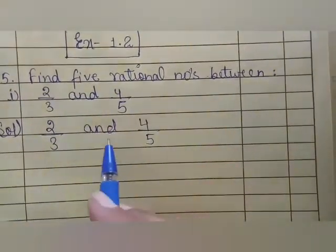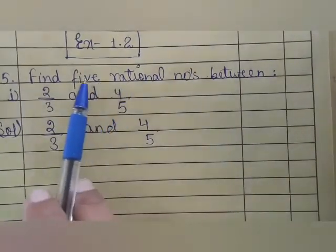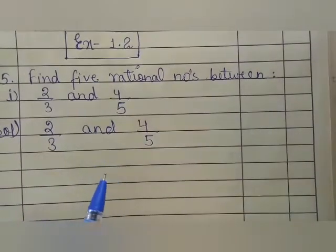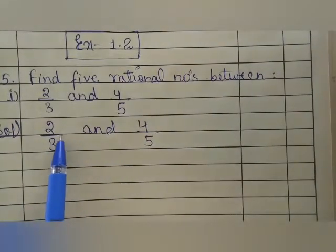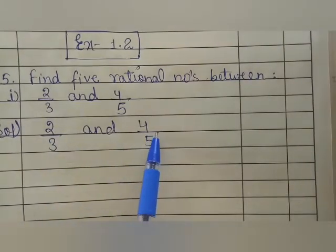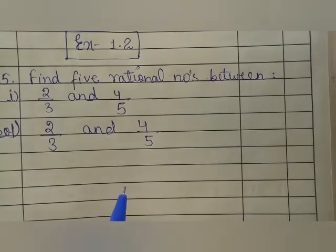First of all, you have to concentrate on the numbers. Before finding 5 rational numbers from these 2 numbers, you have to first make the denominator same of the given both numbers.